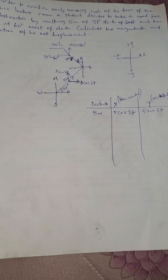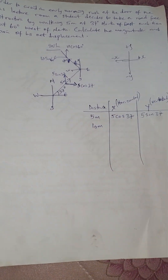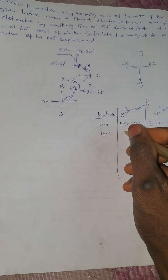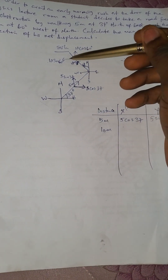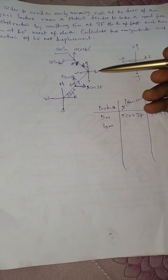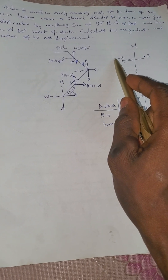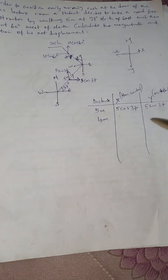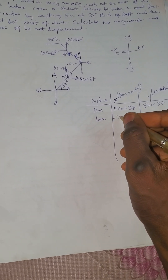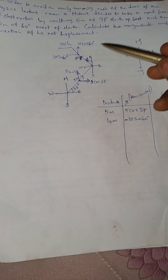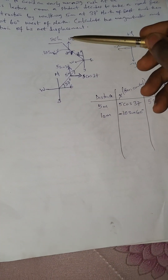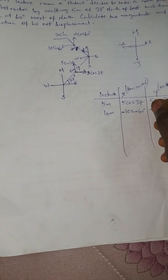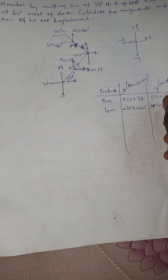For the 10-meter vector, the horizontal component is 10 sine 60. Does it fall to the negative x axis or positive x axis? If we check it, it belongs to the negative x axis, so this takes minus: that's minus 10 sine 60. For the vertical component, does it belong to positive y or negative y? It belongs to the top — positive y — so that's plus 10 cosine 60.